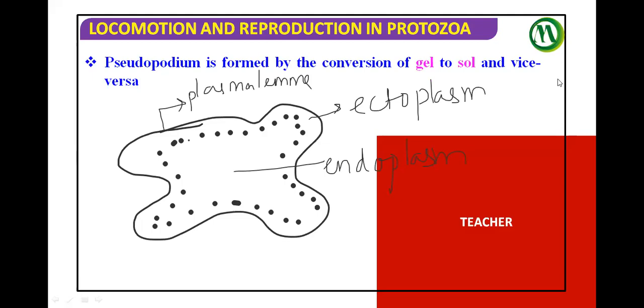Just remember to keep these terms in mind. The pseudopodium is formed by the conversion of the gel to Sol and vice versa.